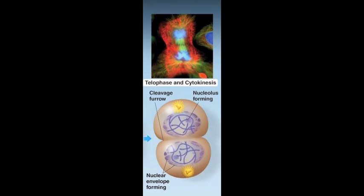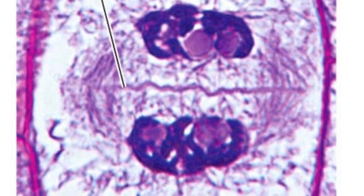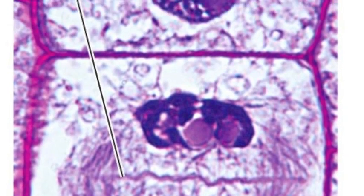Finally in telophase, two daughter nuclei form around the chromosomes at each pole of the cell. At the end of telophase, the nuclei resemble interphase nuclei.